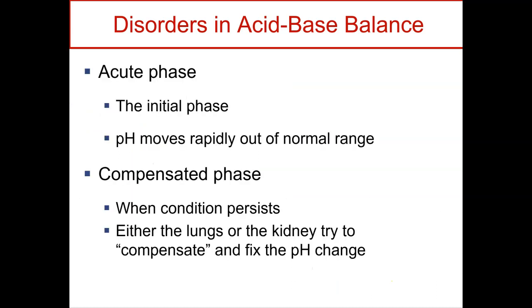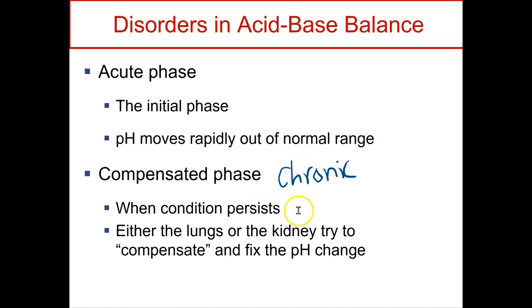When we have acid-base imbalances, they will be either the acute phase, which is the initial phase — this is when we first have the problem in the system, happening within minutes to hours, and we have a pH change that occurs. Compensated is more chronic, occurring when the condition is persisting for several hours and days. If the lungs are failing, the kidney will jump in and buffer to maintain the pH, or if there's a problem in the kidneys, the lungs will jump in and try to buffer.